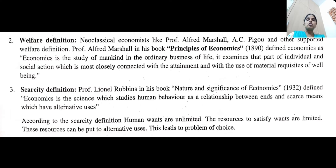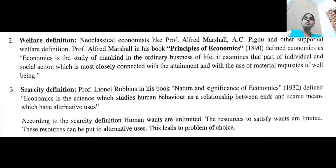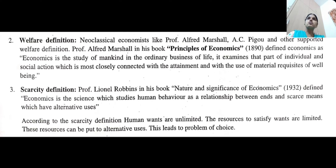The three main important points of this definition are: one, human wants are unlimited; two, the resources to satisfy these wants are limited; three, these resources can be put to alternative uses; and four, this leads to the problem of choice. According to the scarcity definition, human wants are unlimited.